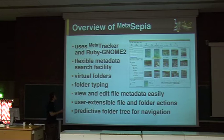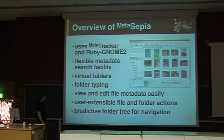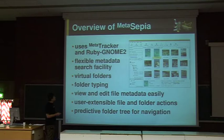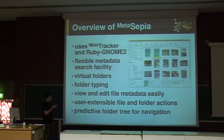Here you can see the graphical user interface. It is written in RubyGnome, and the backend is a metadata database called Tracker. It's an indexing and searching engine with a database built in, so you can put your own metadata into the database, which is then used for searching as well. You can add flexible possibilities of making a metadata search query. You can have virtual folders which you can define yourself. It has folder typing, which I will explain later. And you can easily view and edit file metadata down here. You can add your comments, tags, and rating, and edit the other metadata like they are built into the files as well.